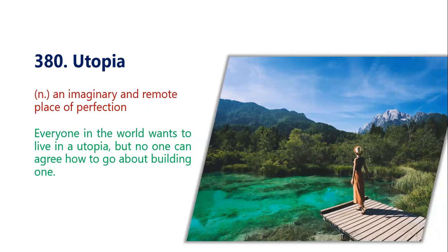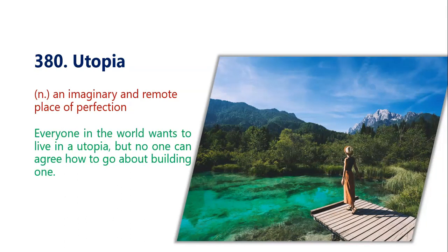Next word is utopia, means an imaginary and remote place of perfection — a perfect place which we imagine. Everyone in the world wants to live in a utopia, but no one can agree on how to go about building one — everyone wants to live in a perfect world, but no one wants to actually make that perfect world. In the picture we can see a beautiful, perfect place. That's it for today, thank you so much.